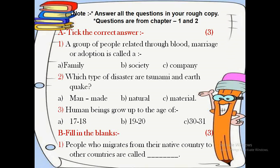Question number 2: which type of disaster are tsunami and earthquake? Option A: manmade, Option B: natural, or Option C: material.